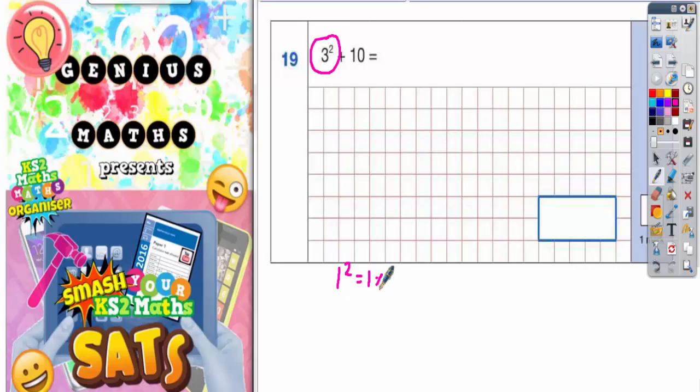1 squared would be 1 times 1, which is 1. 2 squared is 2 times 2, which is 4. 3 squared is 3 times 3, which is 9.